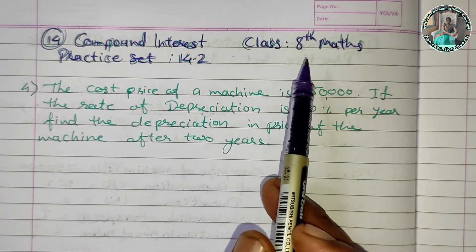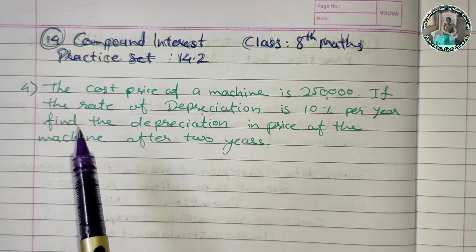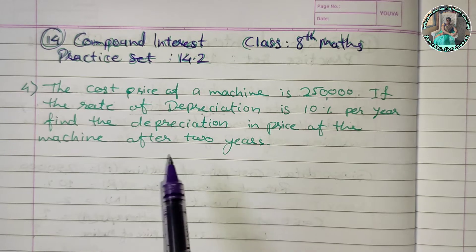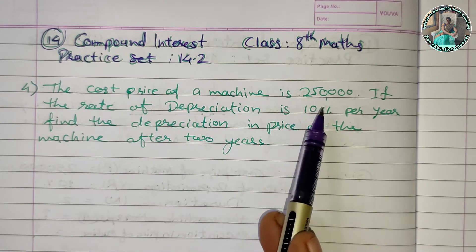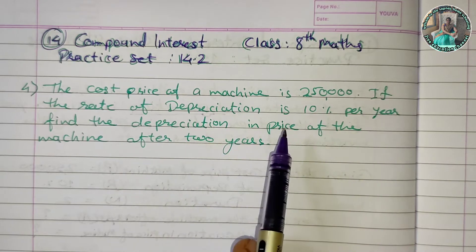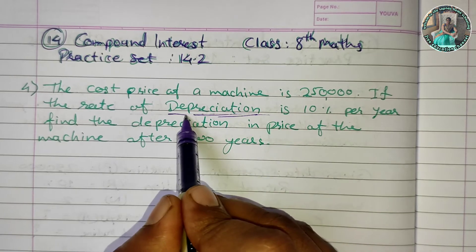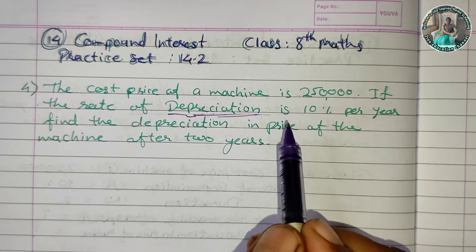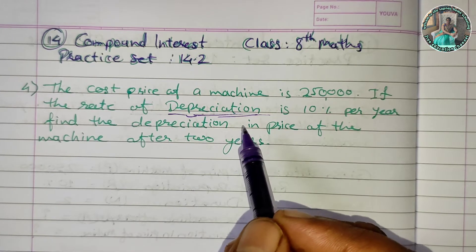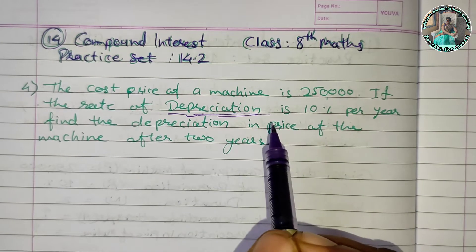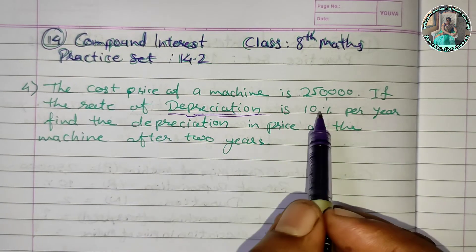The 4th sum from Practice Set 14.2 of Chapter Compound Interest: The cost price of a machine is Rs. 2,50,000. The rate of depreciation is 10% per year.